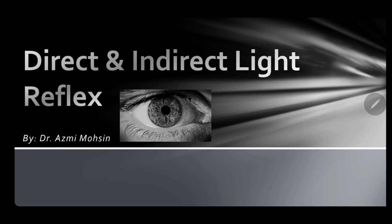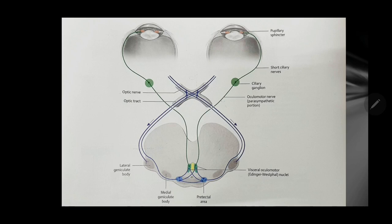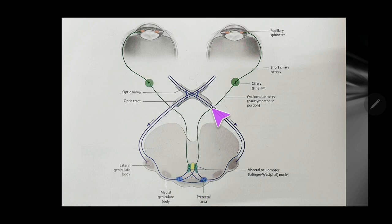Now let's talk about the pathway of this direct and indirect light reflex. Here you're seeing is the pathway of pupillary constriction — the pupillary reflex. The blue color track shown is the afferent limb of this visual reflex, and the green color is for the efferent pathway, the efferent limb of the visual reflex.